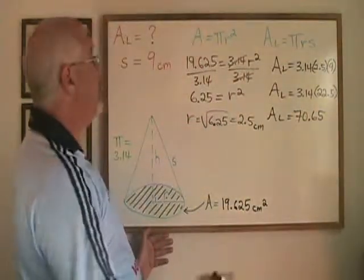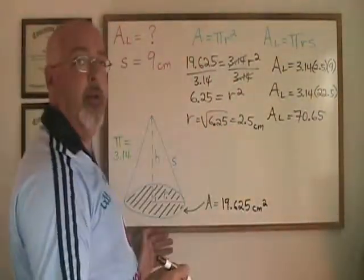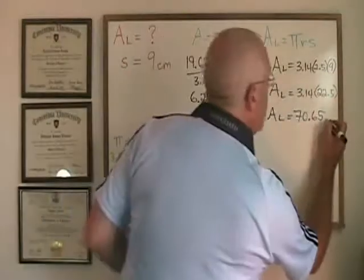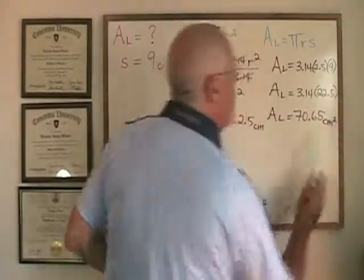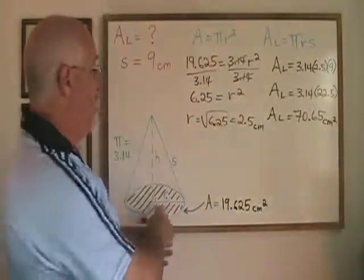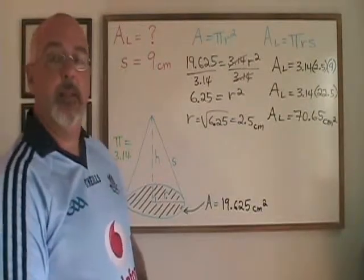And that means our lateral area is equal to 70.65. Again, it is an area. Since we were dealing with centimeters, the area will be centimeters squared. The lateral area of this cone is 70.65 centimeters squared.